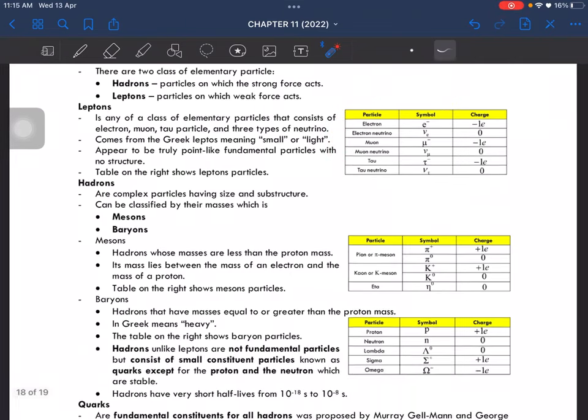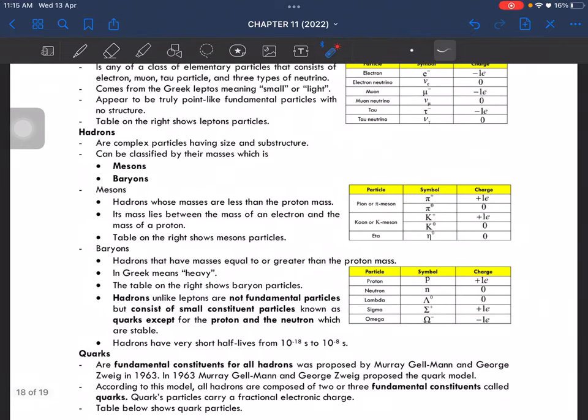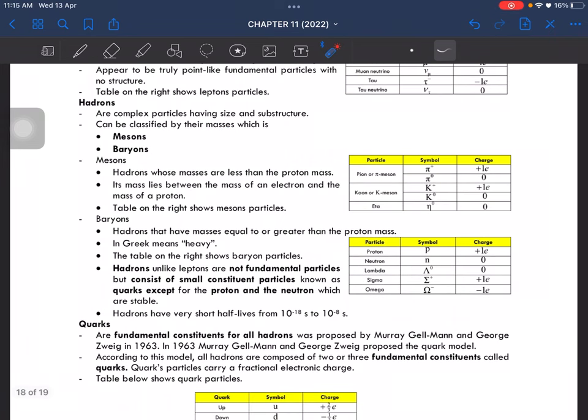Hadrons are complex particles which have size and substructure. They can be classified by their masses, which is mesons and baryons. Mesons have masses less than the proton mass.